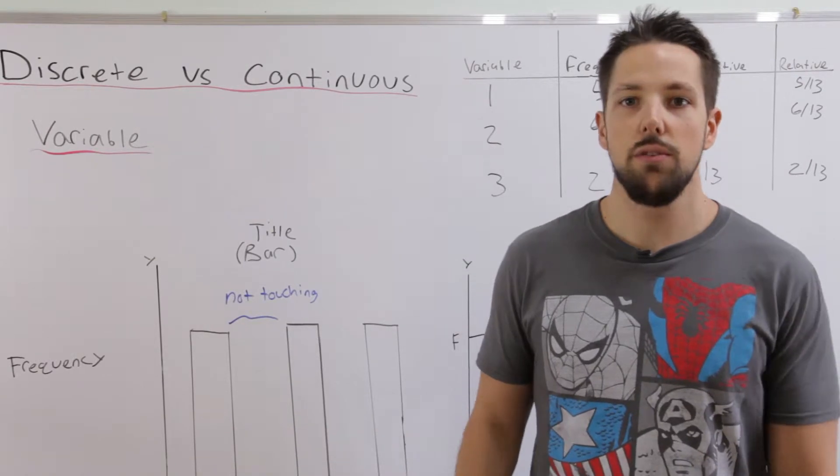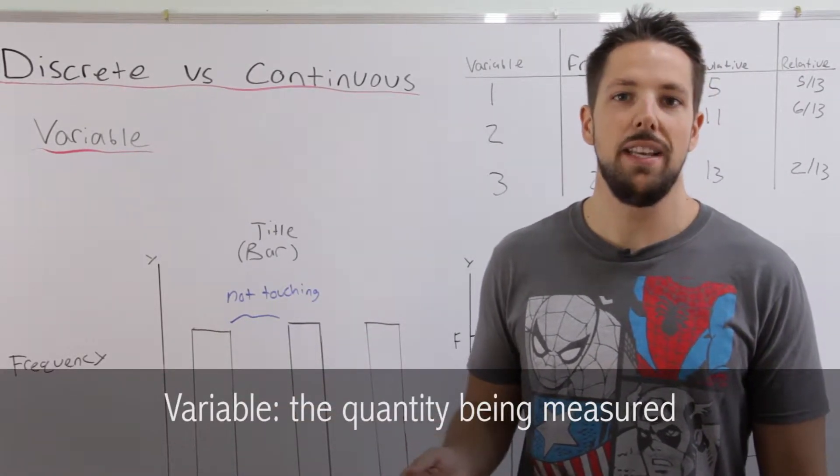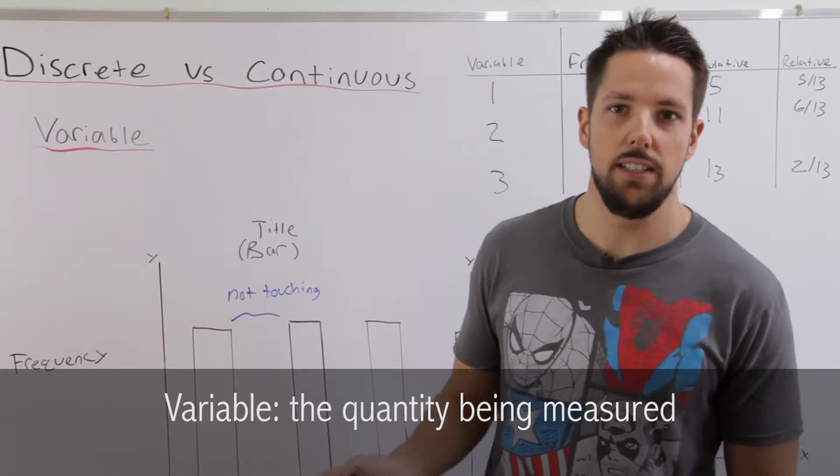We're going to start with some definitions. So the first one we're going to do is variable. The variable is the quantity that's being measured and it'll change from study to study.